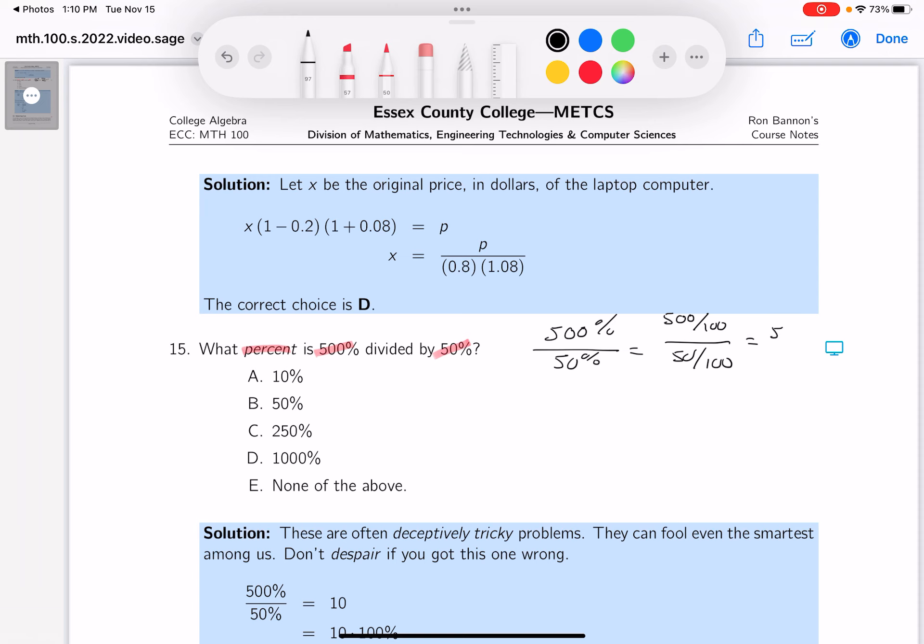So what would this give you? It would give you 500 out of 50, and that's going to give you 10. Now I want to point out, that's a number 10, that's not a percentage. So if you want to make that a percentage, what are you going to do? 10 times 100%, and that would give you 1000%.